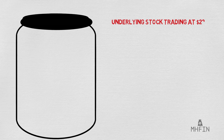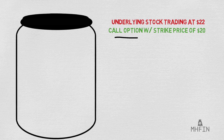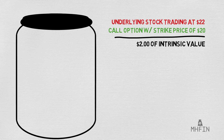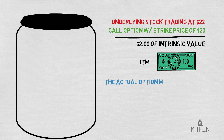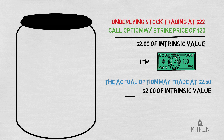I have set up a visualization in order to demonstrate this concept. If we pretend we have a stock trading at $22 and we buy a call option for that stock with a strike price of $20, we can simply calculate the intrinsic value by subtracting the underlying asset price, aka $22, minus the strike price, aka $20. This leaves us with a $2 amount, which is the intrinsic value. We call these types of call options — in which the stock price of the underlying asset is higher than the strike price — in the money, or ITM. Let's say the actual option price is trading at $2.50. We know we have an intrinsic value of $2, so if we subtract the option price by the intrinsic value, we get the extrinsic value, which is $0.50.